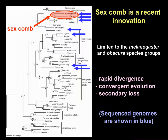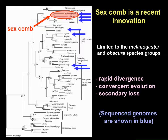To orient you on the Drosophila phylogeny: this large phylogeny of Drosophilids shows sequenced genomes in blue, and the lineage on top in pink — these are really the only flies that have sex combs, limited to the melanogaster and the related obscura species groups. Within that relatively small lineage of about 200 species, there are many examples of rapid divergence in sex comb morphology, convergent evolution of similar sex combs through very different cellular mechanisms, and examples of secondary loss. This is a very rich playground to understand the origin and diversification of a new sexual trait.